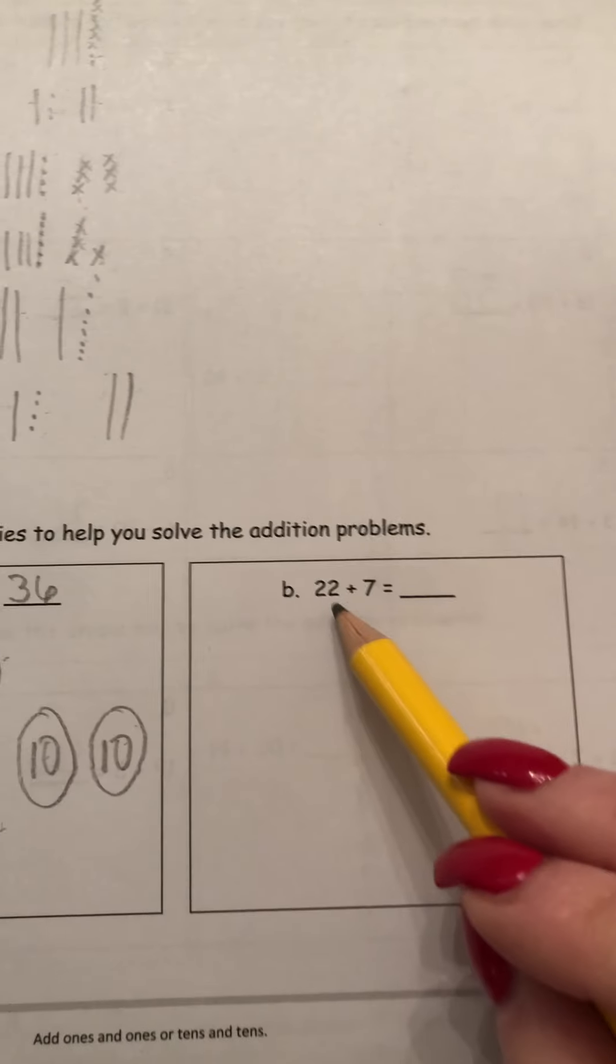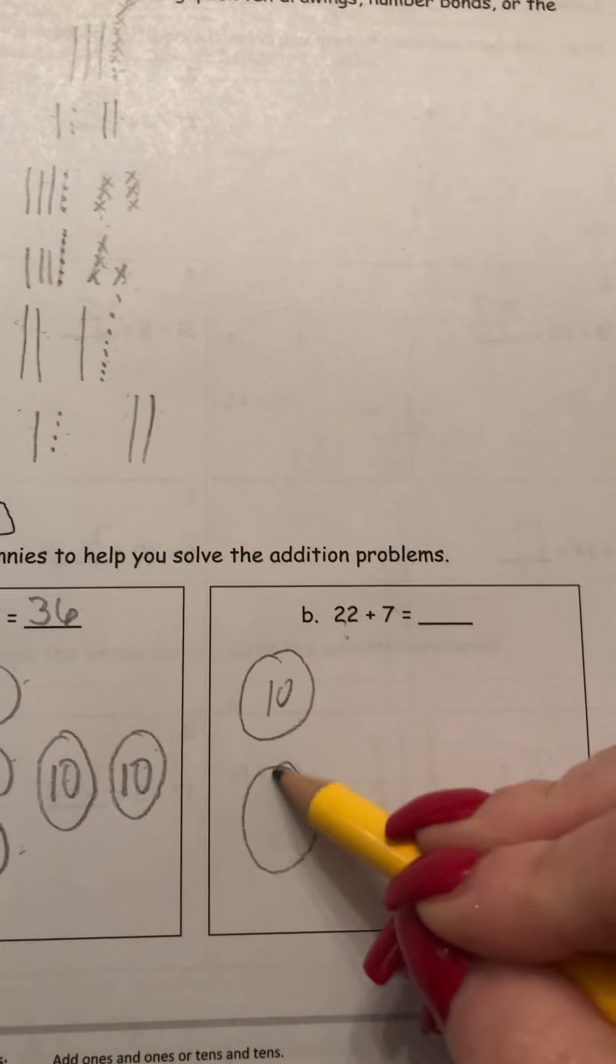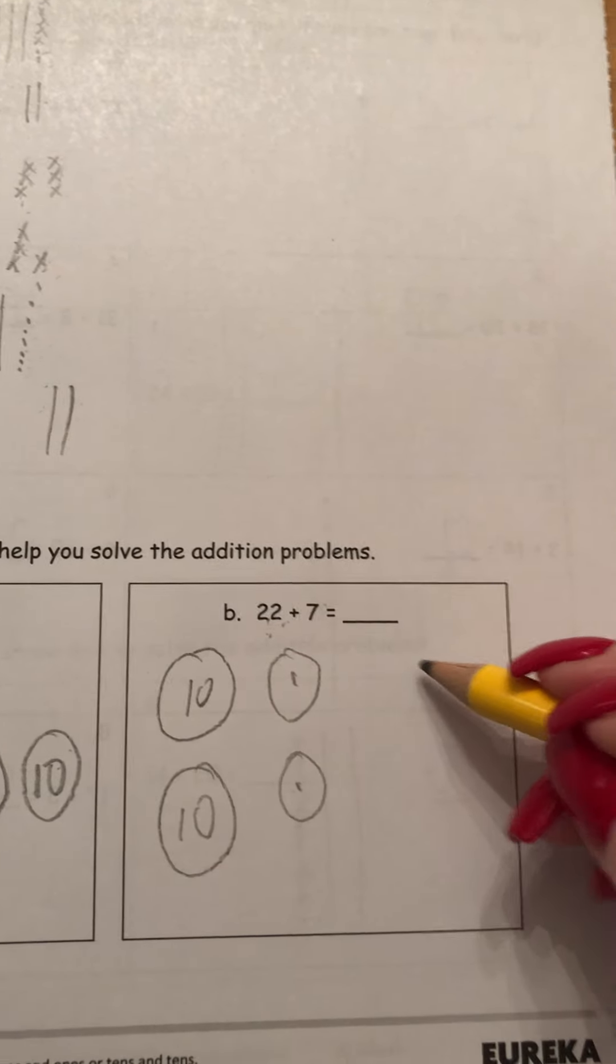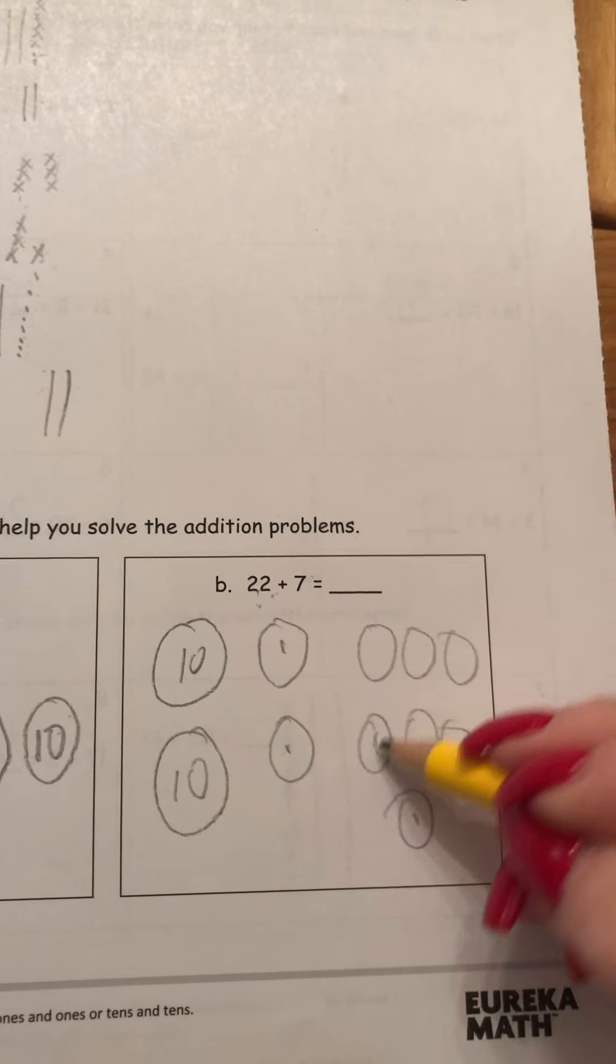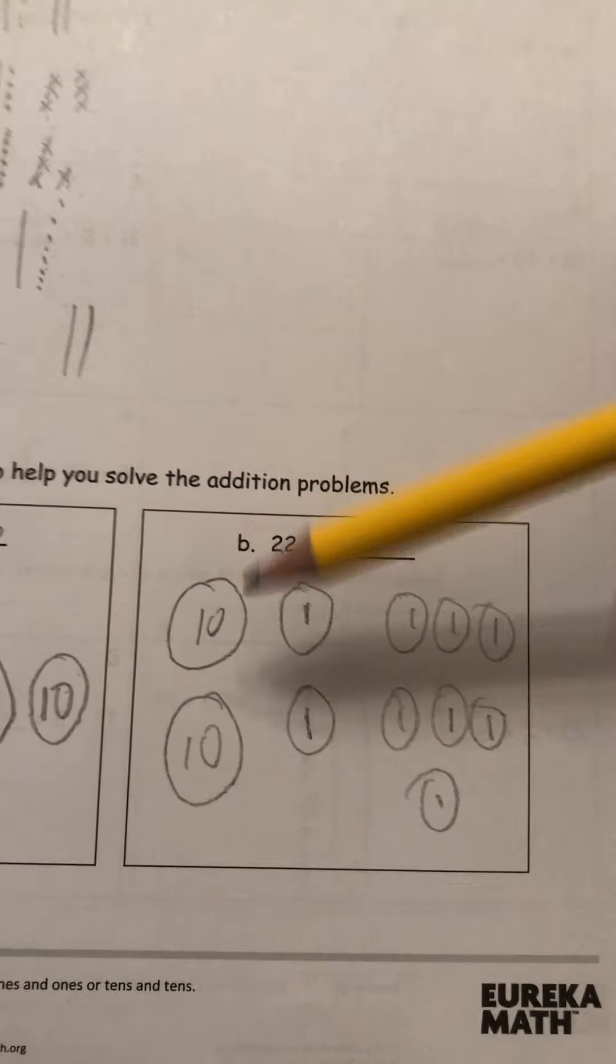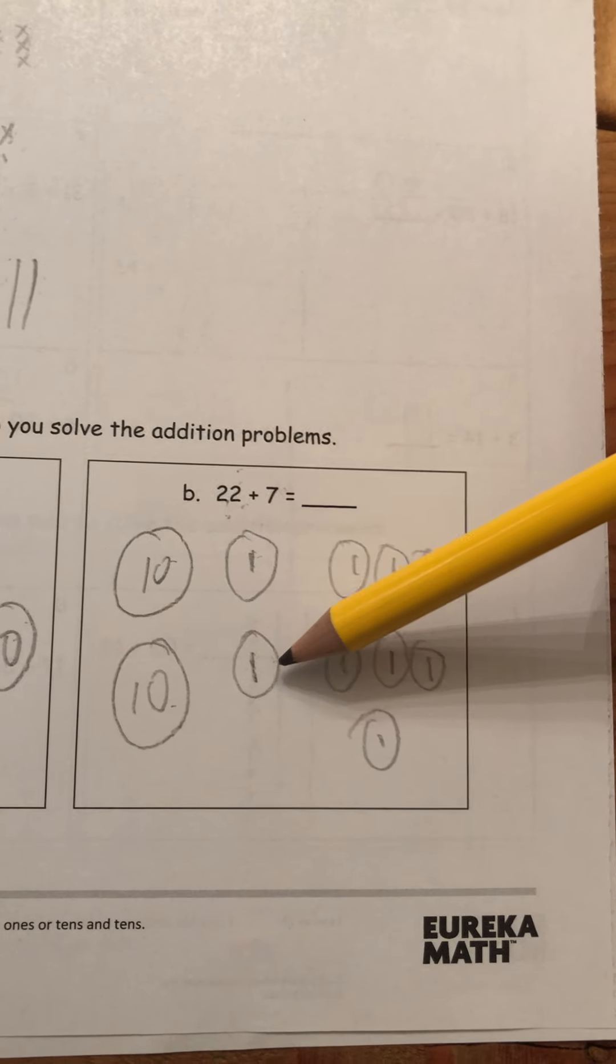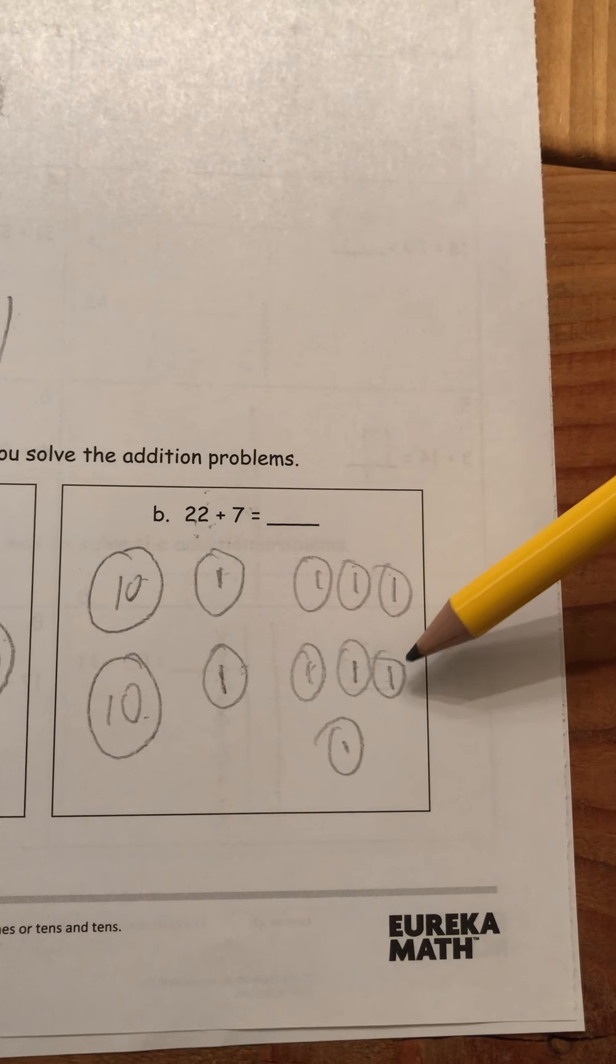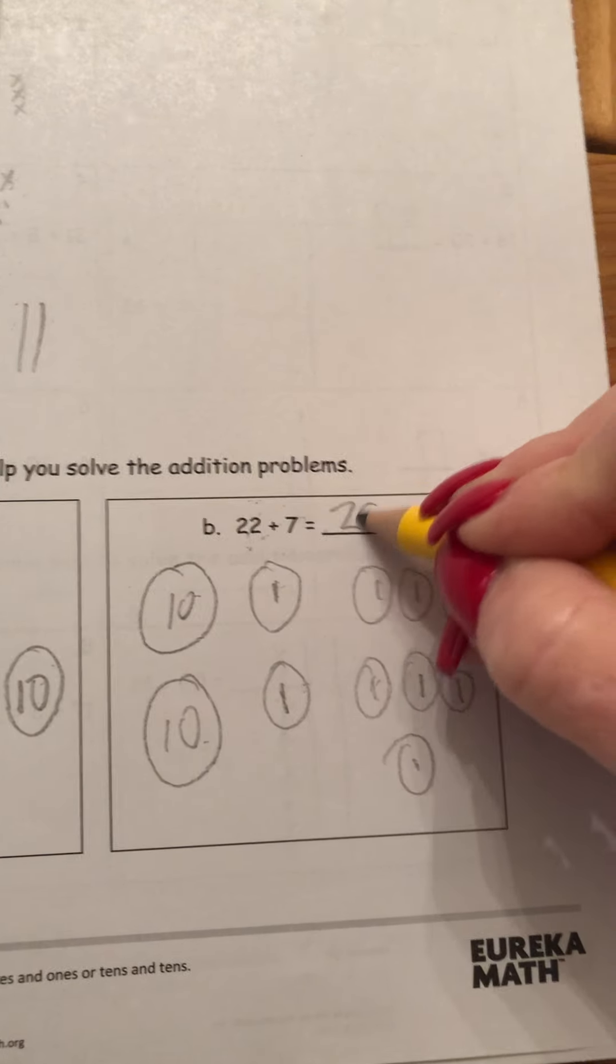I'm going to draw dimes again. I will need two dimes for the 20 part. And the two over here needs two pennies. And the seven needs seven pennies. So 1, 2, 3, 4, 5, 6, 7. And I'm going to put ones in all of my pennies so I don't get confused. So let's count them up. I have 10, 20, 21, 22. That's from that number there. And now I'm going to count on it from 22, 23, 24, 25, 26, 27, 28, 29. So 22 plus 7 equals 29. Perfect.